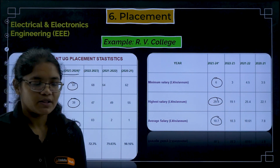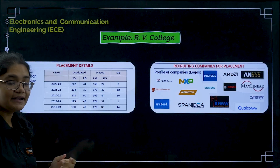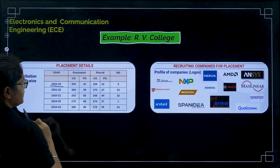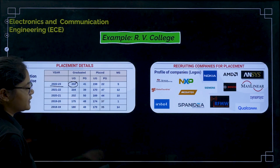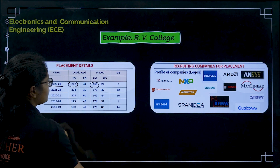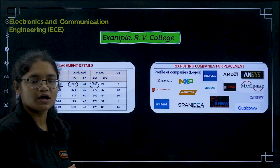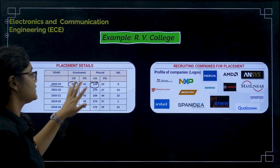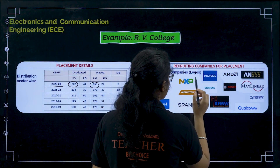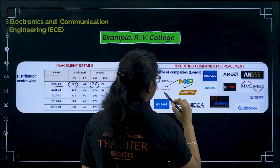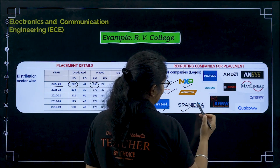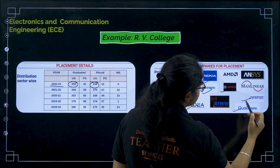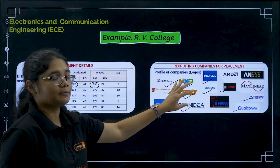Now comparing ECE placements at the same RV College. In 2022–2023, there were 202 total UG students, and 158 students got placed — almost 60–70% placed in well-defined companies. The top companies where these students were placed include Texas Instruments, NXP, Global Foundries, Indel, Spandea, MediaTek, Siemens, Nokia, Bosch, Qualcomm, and Synopsys.